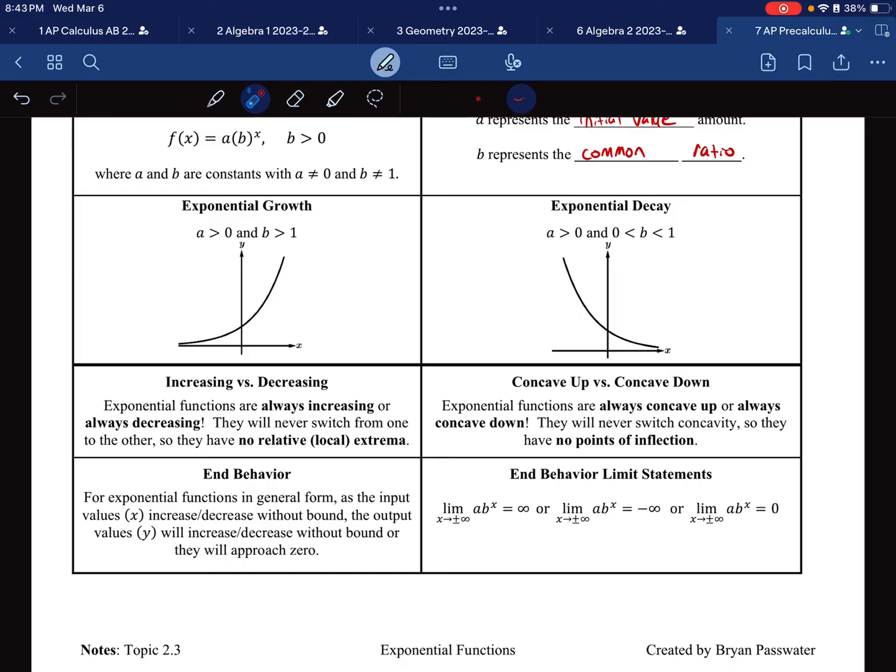We compare this base, this common ratio, to 1. If it's bigger than 1, it's going to go away from the x-axis as I move to the right. If this common base is less than 1, it's going to get closer to the x-axis.